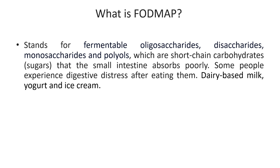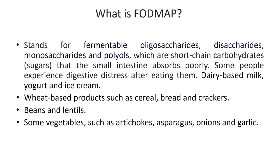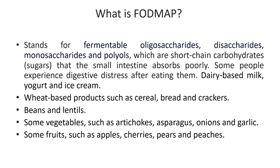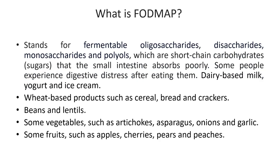Some people experience digestive distress after eating FODMAP foods, including dairy-based milk, yogurt, and ice cream; wheat-based products such as cereals, bread, and crackers; beans and lentils; some vegetables such as artichokes, asparagus, onions, and garlic; and some fruits such as apples, cherries, pears, and peaches.